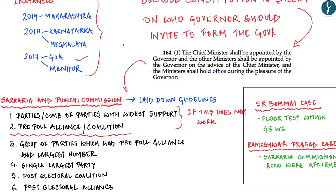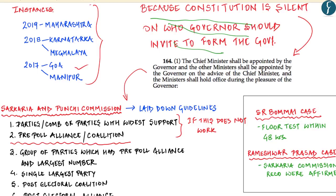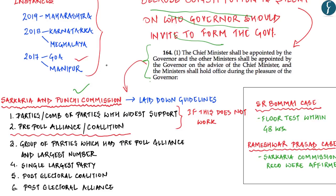These developments in Maharashtra brought focus on the discretionary power of the governor in appointing the council of ministers. All this could happen because the constitution is silent on who the governor should invite to form the government under Article 164(1). It is extremely pertinent to discuss the recommendations of two important commissions for centre-state relations: the Sarkaria and Punchhi commissions, as well as two important Supreme Court judgments — the S.R. Bommai case and Rameshwar Prasad case.